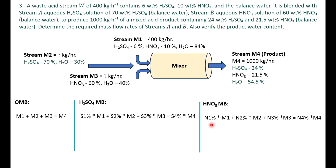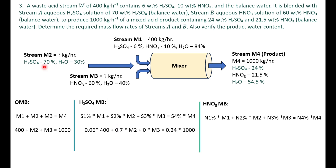Substituting values: in the overall mass balance, m1 = 400 and m4 = 1000 are known. For the sulfuric acid balance: 0.06 × 400 + 0.7 × m2 + 0 × m3 = 0.24 × 1000. The sulfuric acid fraction in stream 3 is zero, so that term drops out. The product term gives 240.